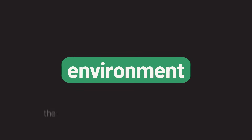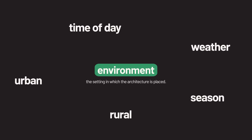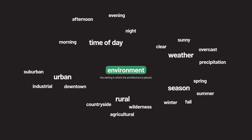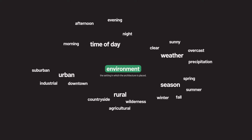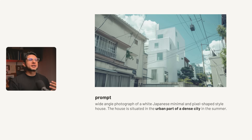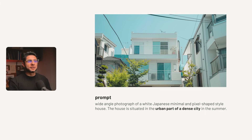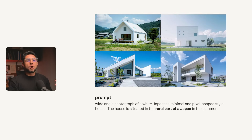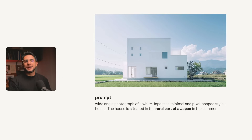Now let's talk about environment — the setting in which the architecture is placed, which frames the subject and provides context. This can alter the mood and narrative of the image. Key considerations include whether it's an urban or rural environment, what time of day it is, and what the weather and season are. Urban settings emphasize the architecture's relationship with the cityscape, while rural focuses on how architecture integrates with natural landscapes such as forests, mountains, or plains, offering a serene or isolated feel.